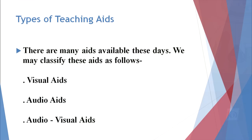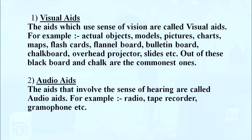Now we will discuss the types of teaching aids. There are many aids available these days, which we may classify as follows: visual aids, audio aids, and audio-visual aids. Visual aids are those that use the sense of vision — for example, actual objects, models, pictures, charts, maps, flashcards, flannel board, bulletin board, chalkboard, overhead projector, slides, etc. Out of these, blackboard and chalk are the most common ones.